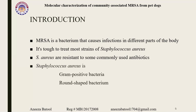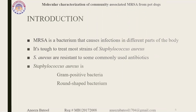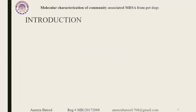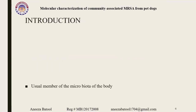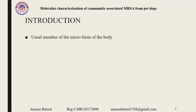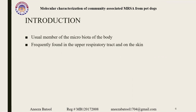Staphylococcus aureus is a gram-positive, coagulase-positive bacterium present in round shape. It is present in the human body as normal flora, found in the upper respiratory tract and on the skin.